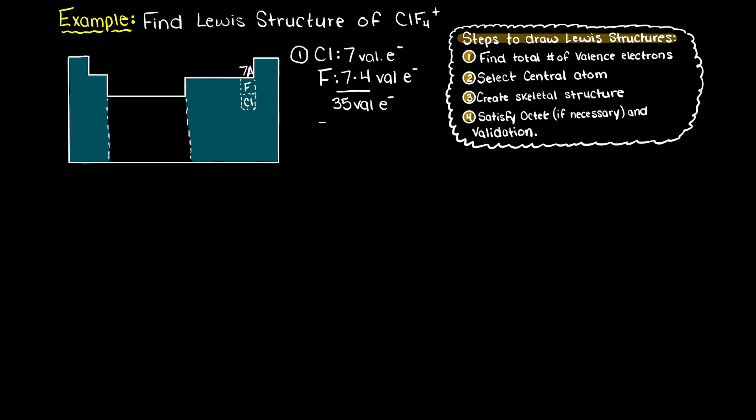Additionally, since our compound has a net positive charge, that means we have one less electron than we would expect. Therefore, our compound in total will have 34 valence electrons.